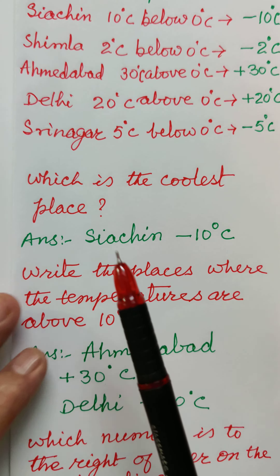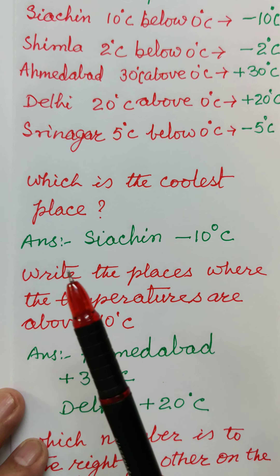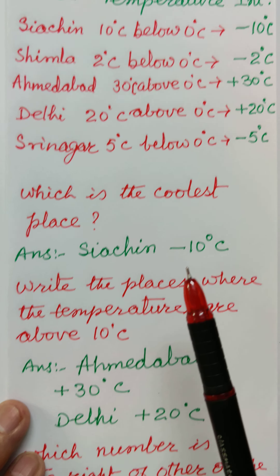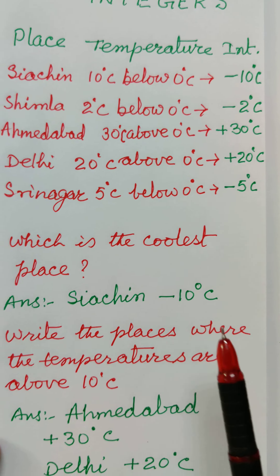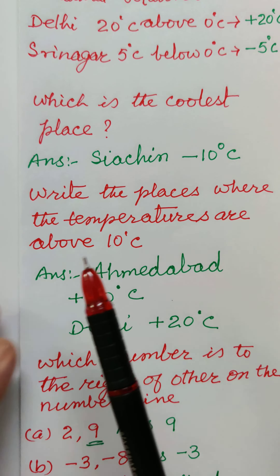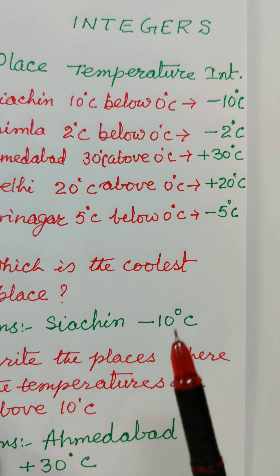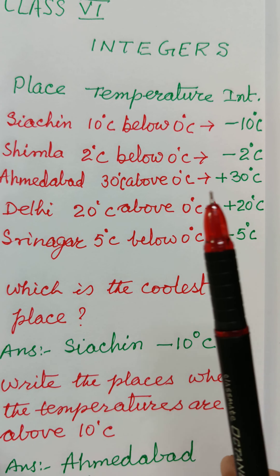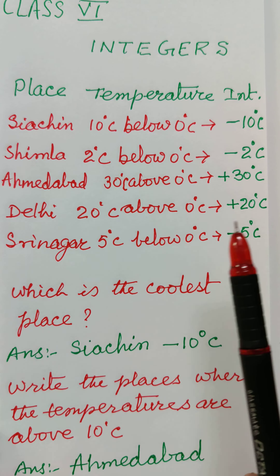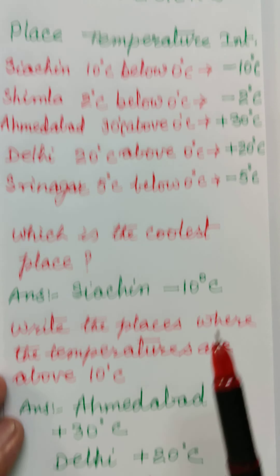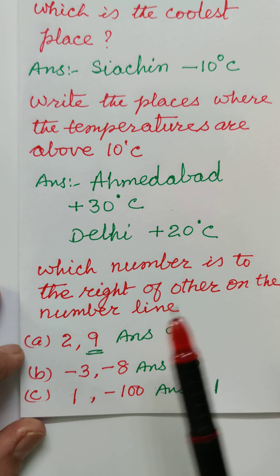Question: which is the coolest place? Siachin, where the temperature is minus 10 degree centigrade, is the coolest place. Write the places where the temperature is above 10 degree centigrade. There are two places: Ahmedabad with plus 30 and Delhi with plus 20 degree centigrade.